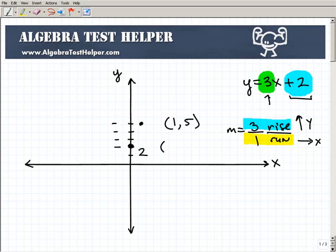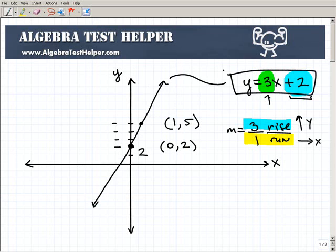This first one, our y-intercept, was the coordinate 0, 2, and now I have two points that are on this line, and all I need to do is basically draw a line through those two points, and you're done. You have the graph of the line y equals 3x plus 2.